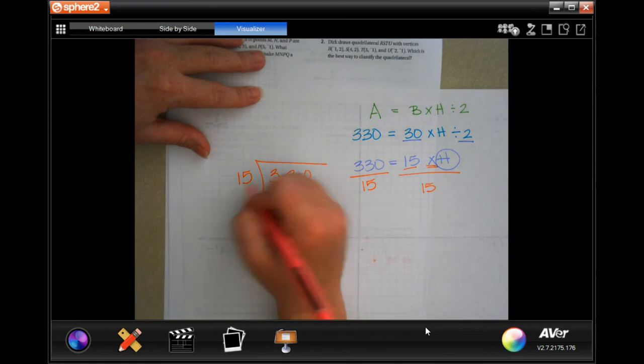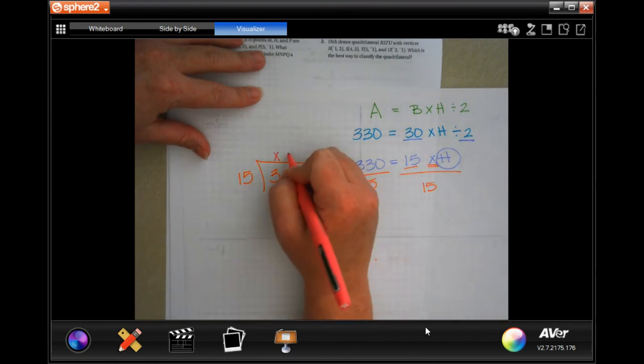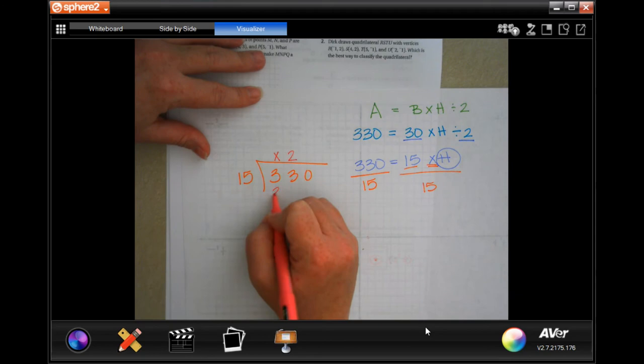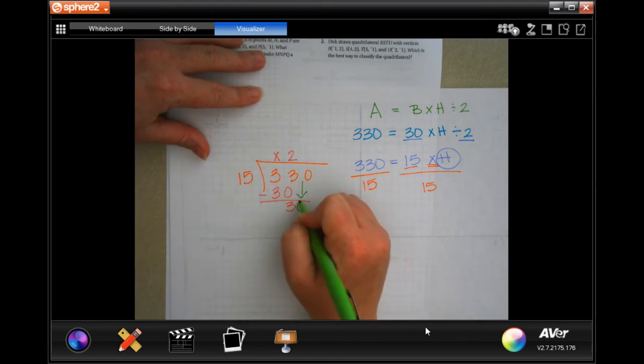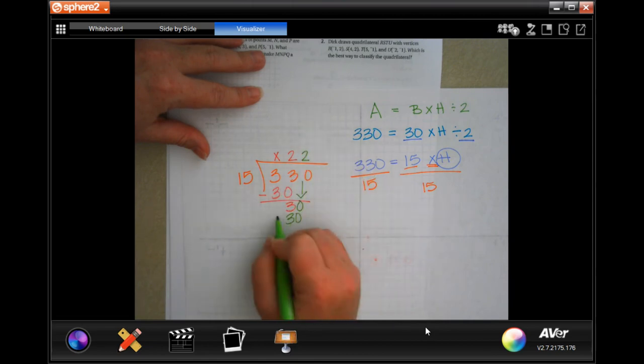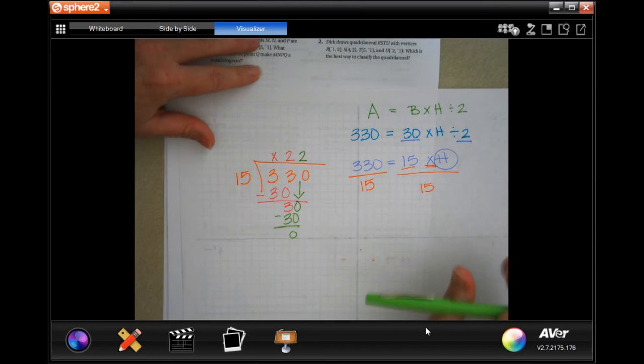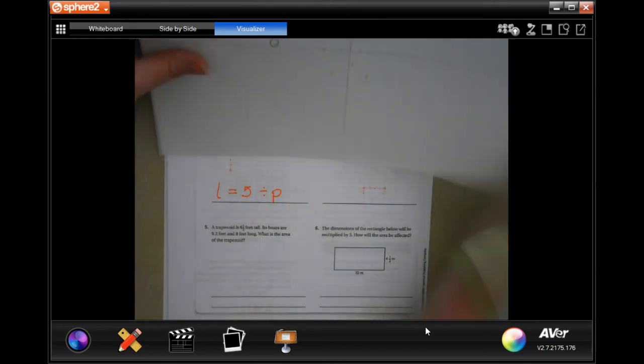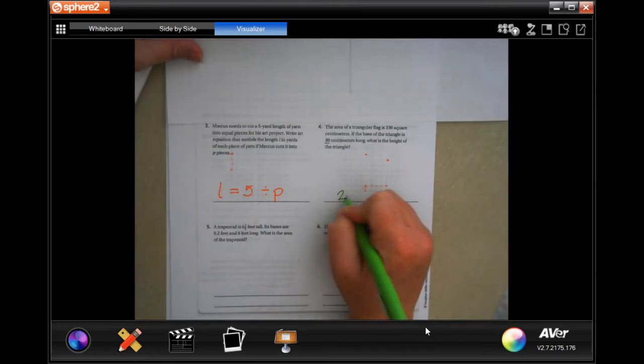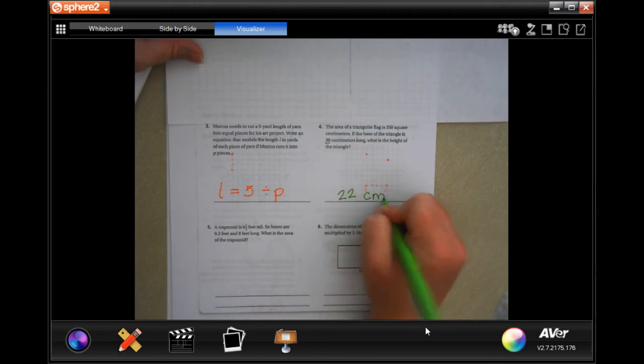Well, 15 is not going to go into 3. It will go into 33, 2 times. 2 times 15 is 30. Subtract and get 3. Okay? 3 is smaller than 15. So I'm going to bring down my 0. And we just said that 15 goes into 30, 2 times. 2 times 15 is 30. Subtract is 0. So your height is 22 centimeters. Okay?